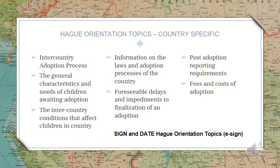Now let's talk about post-adoption reports. The Taiwan Central Adoption Authority, Taiwan Partners, the Chinese Social Welfare institution, and Nightlight require the following post-adoption reports: formal reports by a social worker at 3, 6, and 12 months post-adoption, then annual post-adoption reports from the second to the 10th year post-adoption or until your child turns 18. Nightlight also requires a one-month informal report to be completed by your social worker within one month of your child's arrival home.